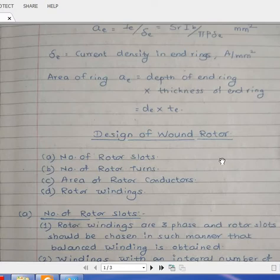When you are designing wound rotors there are four important points which you have to consider. First point is number of rotor slots, number of rotor turns, area of rotor conductors, and rotor windings.